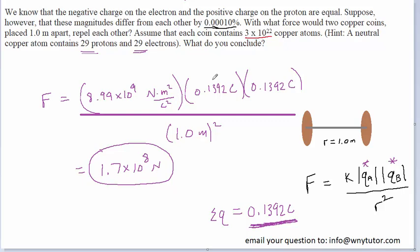The question says, what do you conclude? Frankly, I'm not really sure what they're looking for there, but we can conclude, I suppose, that thankfully, the amount of charge on a proton and electron does not differ by this very fractional amount of a percentage, because if it did, then all the coins sitting in our pockets and our piggy banks would be repelling each other with a very large force, and that would be a very strange situation. So, we can conclude the question by noting the force as being 1.7 times 10 to the eighth newtons.